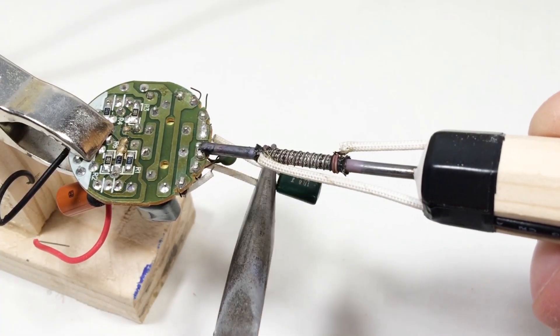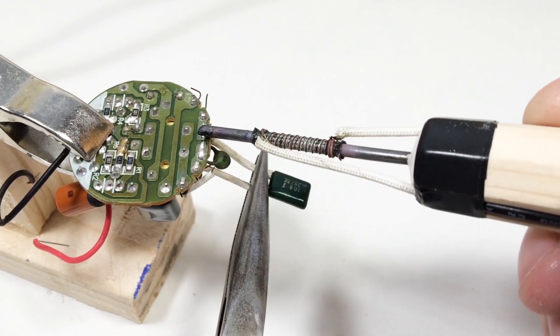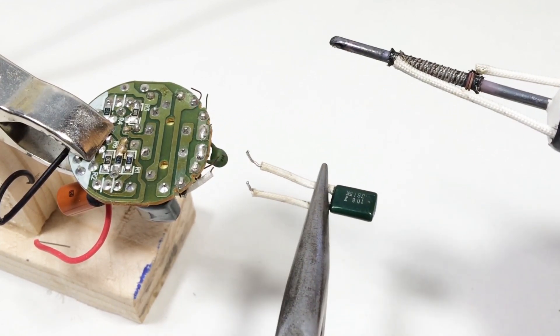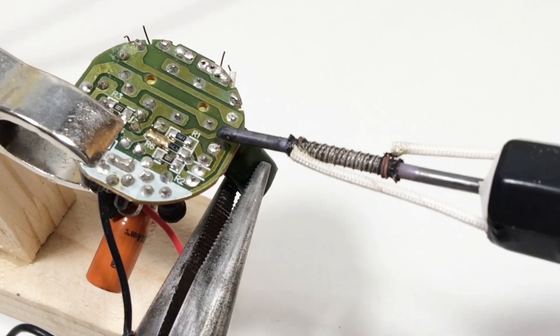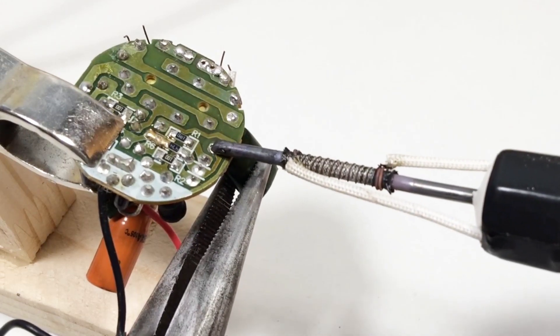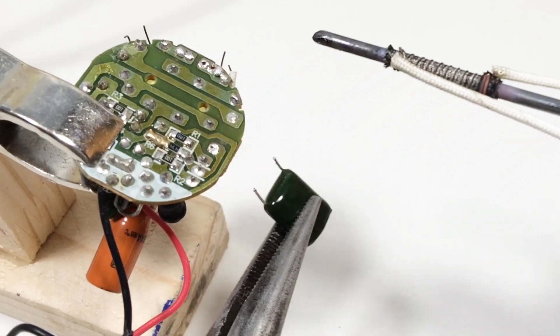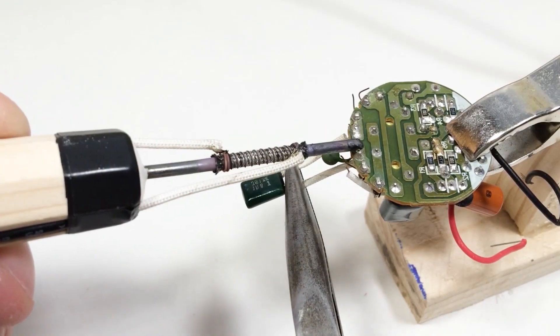And the best part? It really works. This homemade soldering iron melts solder, repairs electronics, and handles small DIY projects, just like a pro tool. Sure, it's not a full soldering station, but as a compact DIY-made iron, it's surprisingly effective.